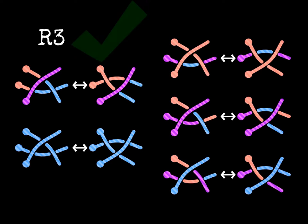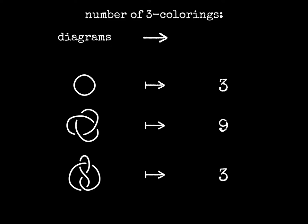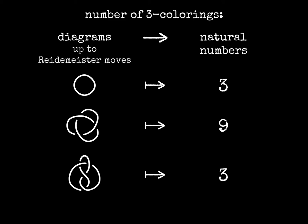This means that if a diagram has a three-coloring, then each diagram obtained applying Reidemeister moves will have a corresponding three-coloring. Counting the number of three-coloring means to associate a number to each diagram, or in other words, to write a function from knot diagrams to numbers. Since this number, the number of three-colorings, does not change when we apply Reidemeister moves, the function is defined also from knots to numbers. We say that the number of three-colorings is an invariant of knots.